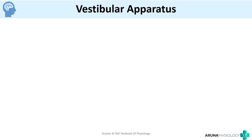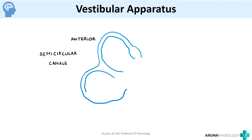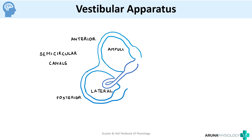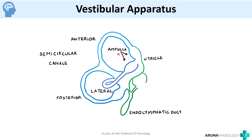We know that we have a vestibular apparatus in our inner ear which is responsible for maintaining equilibrium. The vestibular apparatus mainly consists of three semicircular canals — the anterior, posterior, and lateral — each of which has a sense organ inside its dilated portion called the ampulla. Connected to the semicircular canals are sac-like processes called the utricle and the saccule.